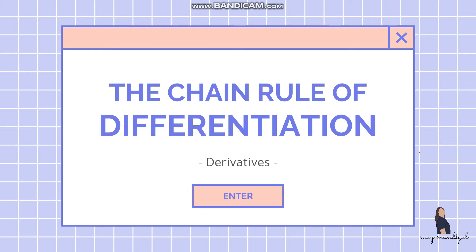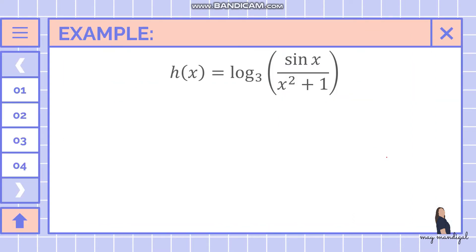For today we will continue our discussion of the chain rule of differentiation with more examples. The first example is h of x equals logarithm base three of sine of x over x squared plus one.